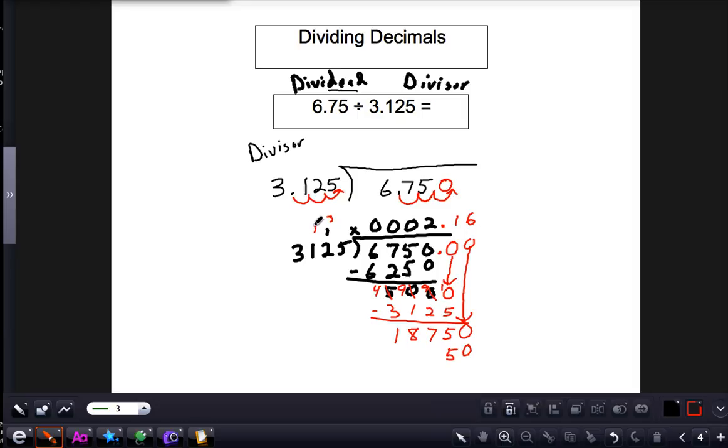6 times 1 plus 1 is 7. 6 times 3 is 18, and we do get the same, so that would equal zero. So our quotient would be 2.16. And that is long dividing with decimals.